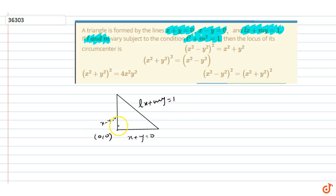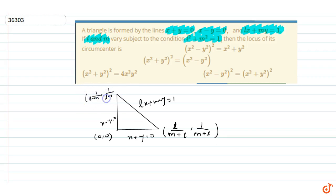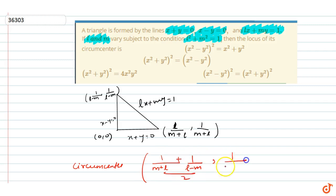The vertices of the triangle are: (0, 0), the point (1/(l+m), 1/(l+m)), and the point (1/(l-m), -1/(l-m)). Since the angle at the origin is a right angle, the circumcenter is the midpoint of the hypotenuse. So the circumcenter coordinates are: x = [1/(l+m) + 1/(l-m)] / 2, and y = [1/(l+m) - 1/(l-m)] / 2.